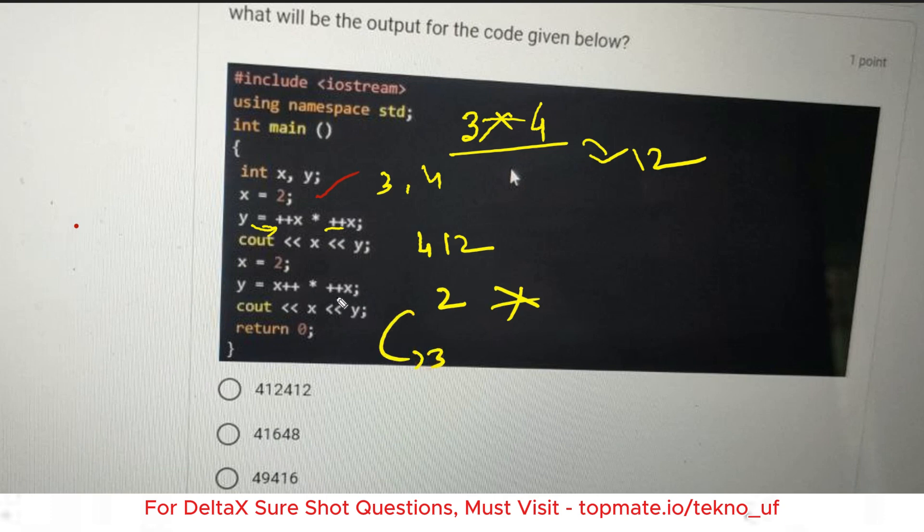X plus plus, so value of x is kept. What is the value of x? That is 2. Then it is incremented to 3, and it is again incremented here, so it becomes 4. Then it is being multiplied with 4. 2 into 4, that is 8. What is the value of x and y here? X is 4, y is 8.